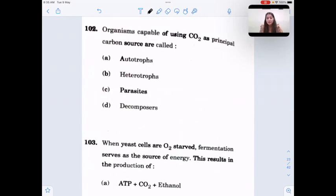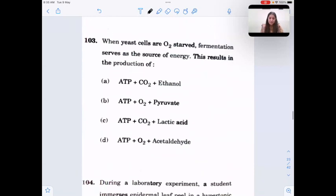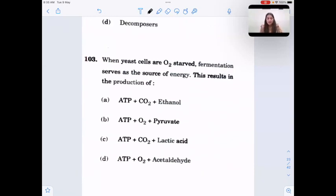Organism capable of using carbon dioxide as principal carbon source are called autotrophs, that is green plants, by the process of photosynthesis. Next, when yeast cells are oxygen deprived, fermentation serves as a source of energy. This results in the production of - in the absence of oxygen, in anaerobic respiration, energy is produced but along with that, lactic acid is produced in case of muscle cells. But here in case of yeast, pyruvate is produced. So ATP, oxygen plus pyruvate.